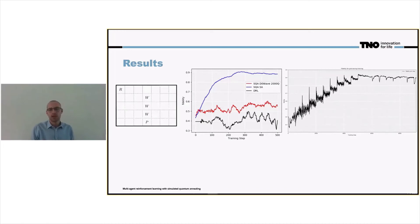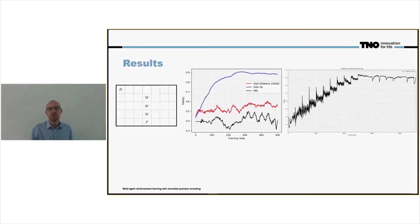If we run the classical deep reinforcement learning for more iterations, we do see that the fidelity of 0.9 is still reached with the classical approach. However, this takes approximately 5,000 training iterations to reach the same fidelity that we obtain with simulated quantum annealing after only 250 training iterations.